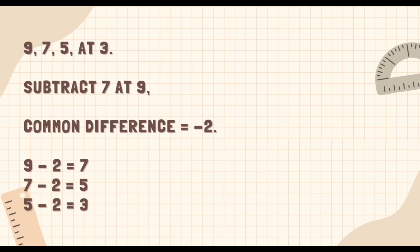Therefore, 9 minus 2 is equals to 7. 7 minus 2 is equals to 5. 5 minus 2 is equals to 3. And so on. Nagsasubtract ang sequence ng 2.